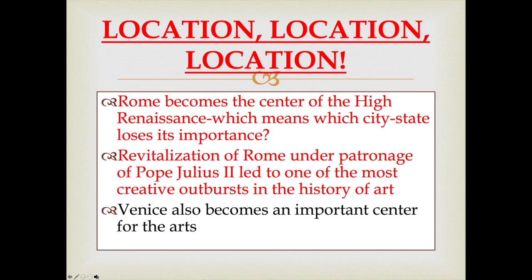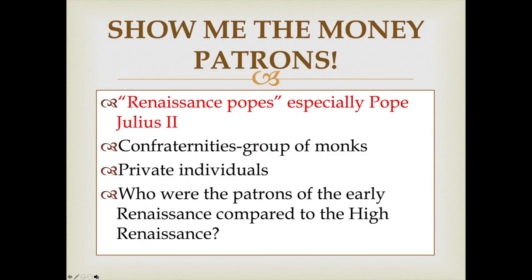The city of Venice also becomes very important during this period. You do need to know who Pope Julius II is — he is considered a Renaissance pope. Not only was the Catholic Church spending money on art, you also had fraternities — groups of monks — spending money creating art for their chapels throughout Italy, as well as wealthy individuals paying artists to create art. The Medicis and other wealthy merchants are still patrons, but they take a back seat to the Catholic Church in this era.